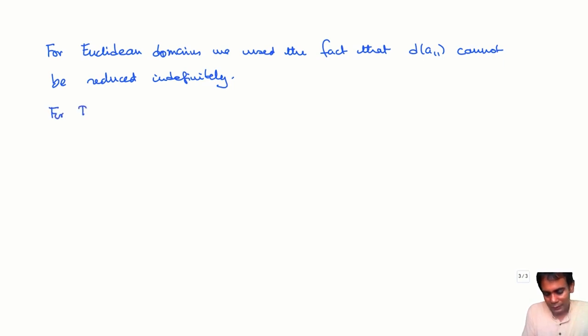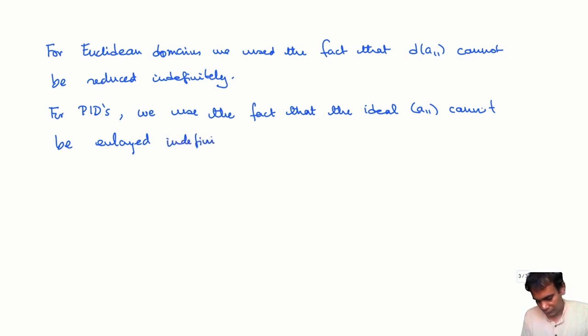For general PIDs, we will use the fact that a PID is a noetherian ring. The ideal cannot be enlarged indefinitely, because then you would end up with a chain of ideals, an increasing chain of ideals that does not stabilize. And so the process must stop after finite steps.